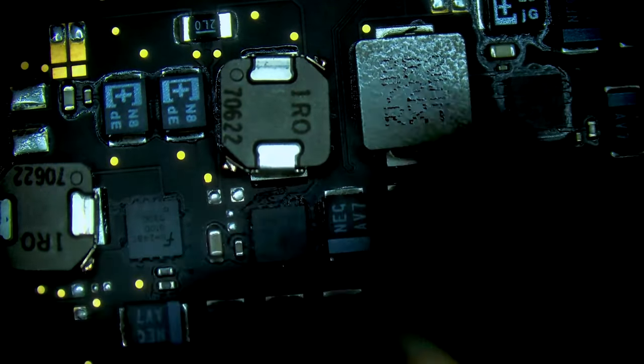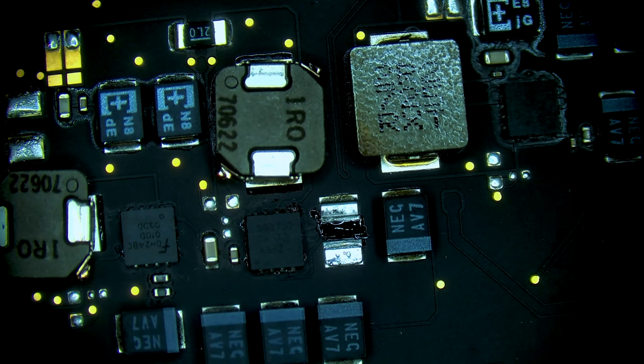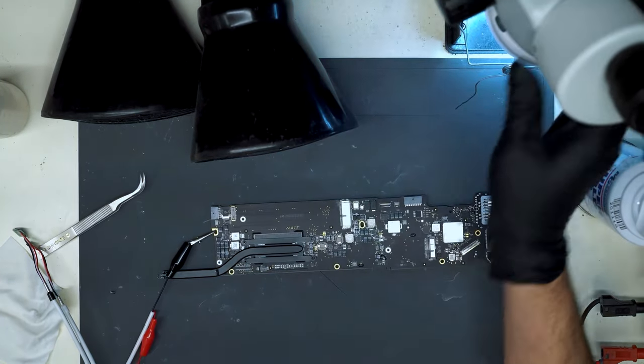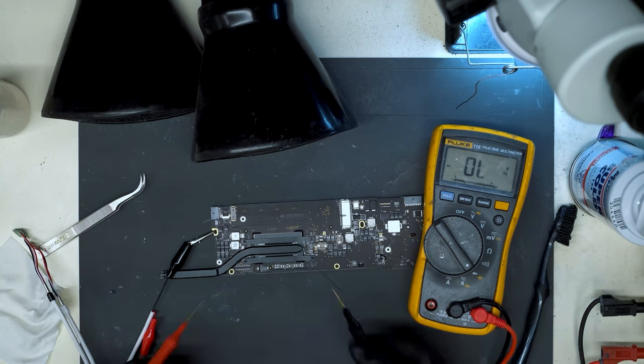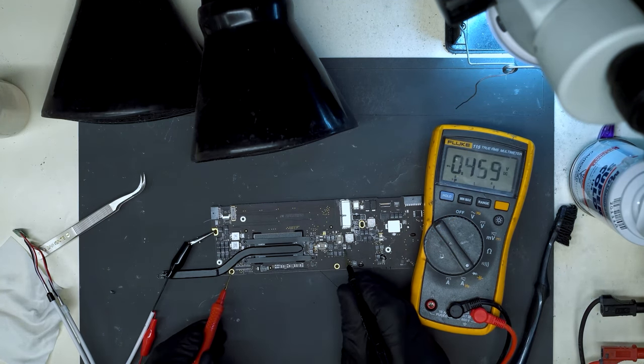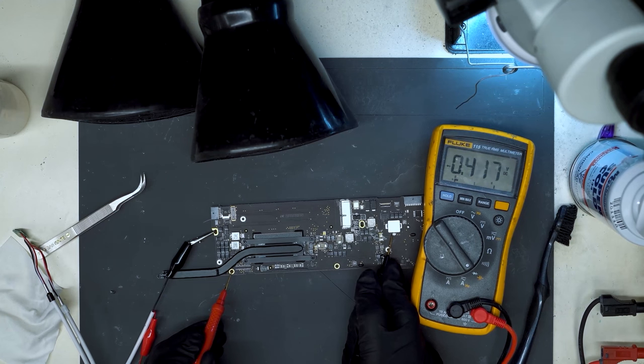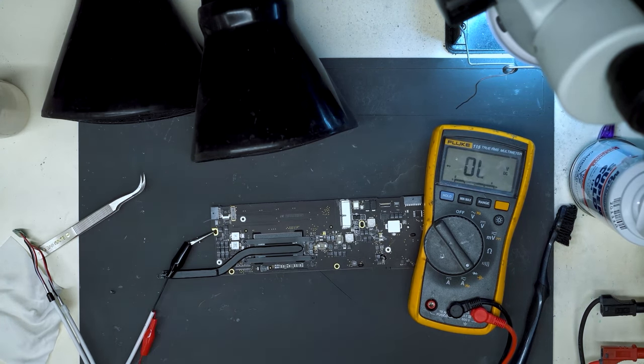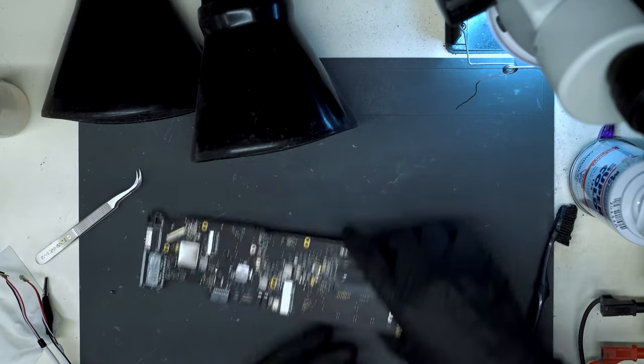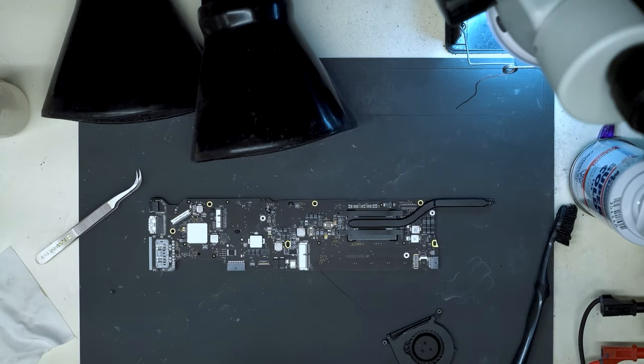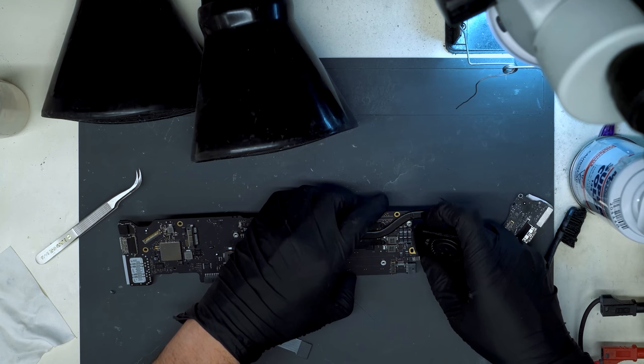Right back over to the overhead view here. We grab our multimeter, set in diode mode. We measure, the short is relieved, we can check on PPBus and we get a normal diode mode reading on PPBus G3 hot. So at this point I can connect a known good I.O. board and flex and fan. Let's see if this fan starts spinning.